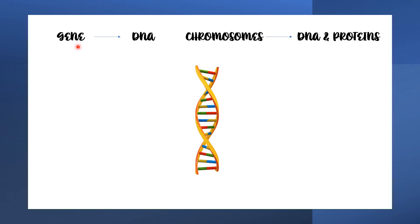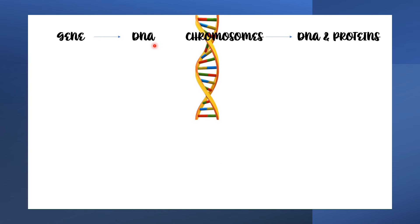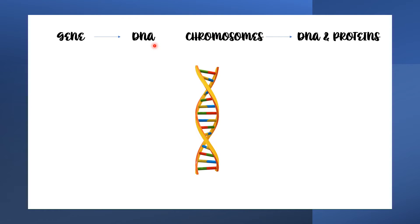The genes consist of DNA, which contains specific instructions for protein synthesis. In order to know the nature and working of genes, we will have to study chromosomes. Chromosomes are composed of DNA and proteins named histones.